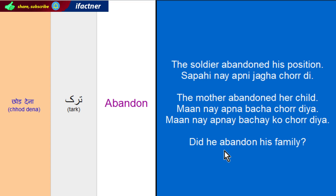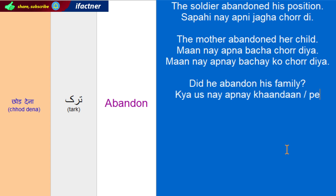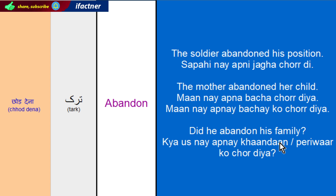Now let's translate: Did he abandon his family? Family is khandaan in Urdu and parivaar in Hindi. When we want to ask a question using did, does, do, or will, we start it with kia. So we say: Kia us nay apne khandaan or parivaar ko chhoddiya? Did he abandon his family? Kia us nay apne khandaan or parivaar ko chhoddiya?